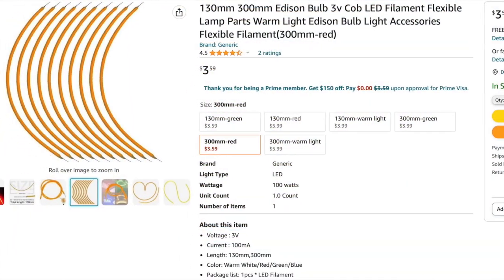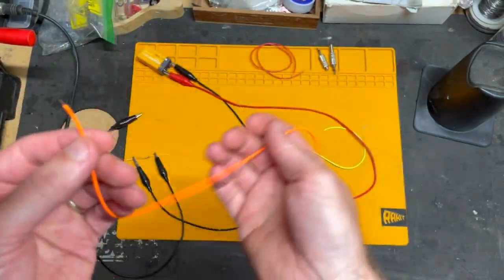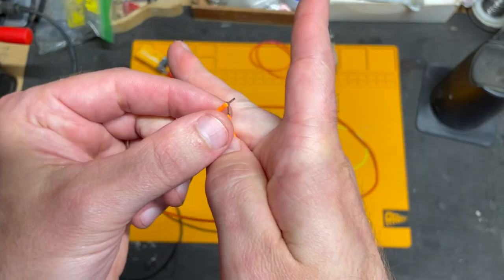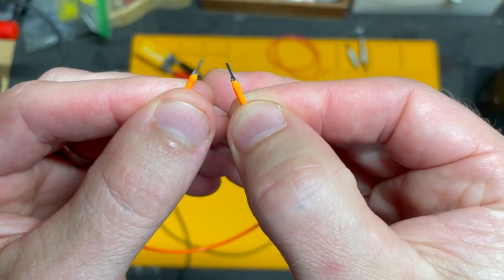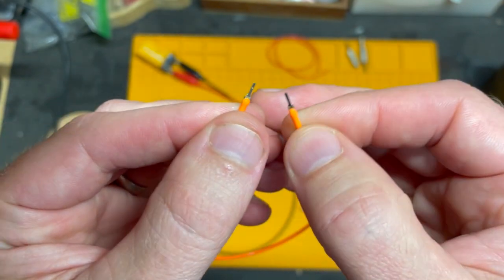But they are actually not wires, these are LEDs. So if I take one of them here, if you look at the end, one end has a little hole through it and one end is solid.